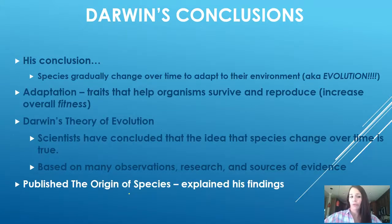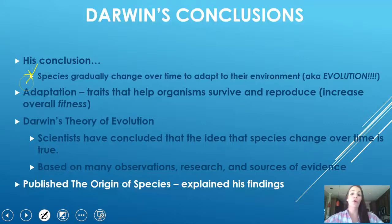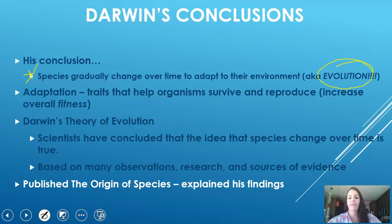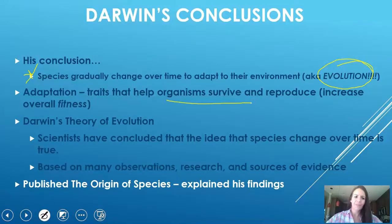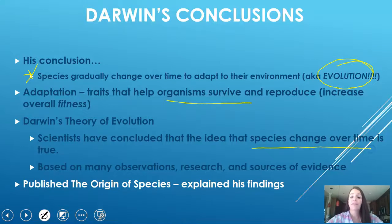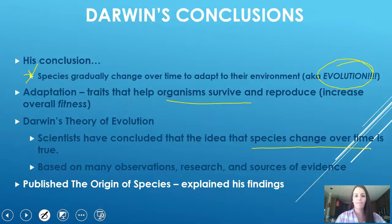In general, Darwin's conclusion was that species change over time to adapt to their environment, and this is essentially the working definition we have of evolution. In terms of an adaptation, this is something that helps an organism survive and reproduce. His theory is based on all of his observations and evidence that has continued to be observed over time.